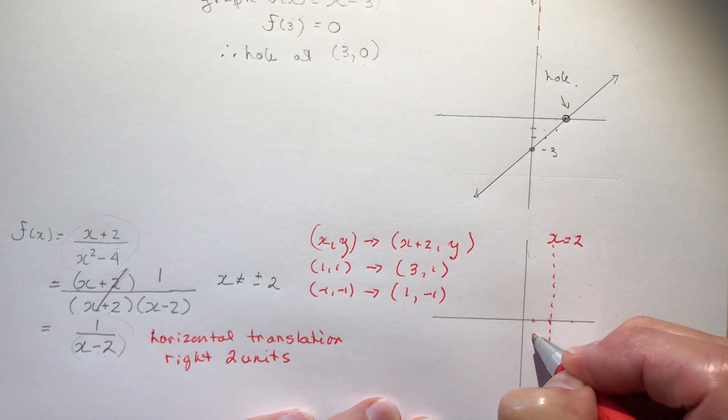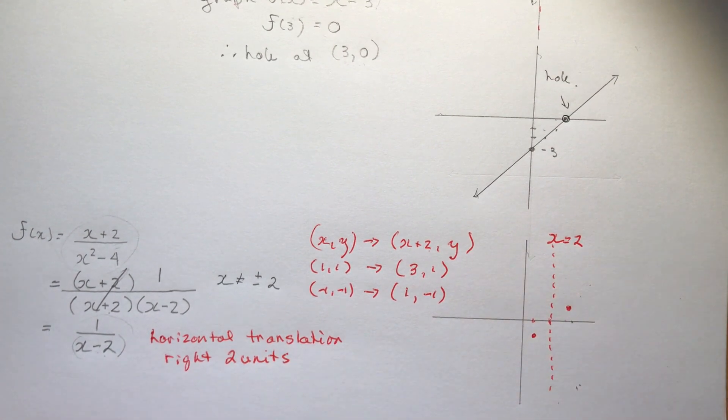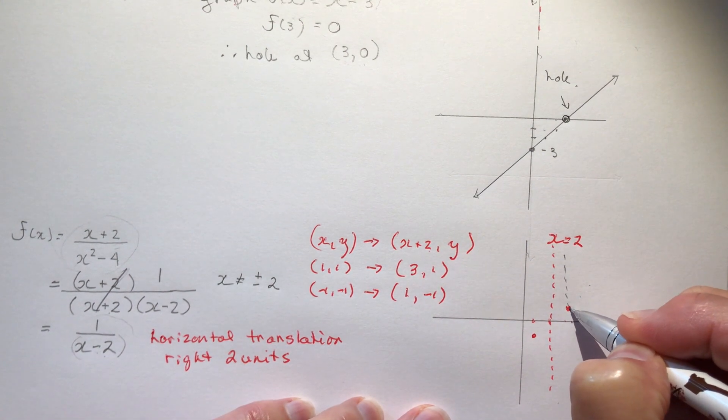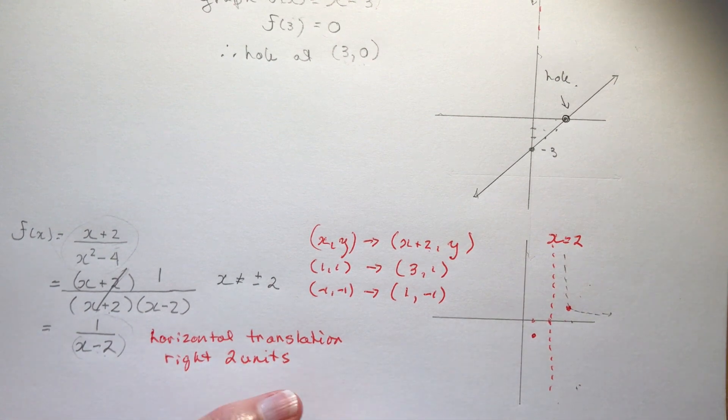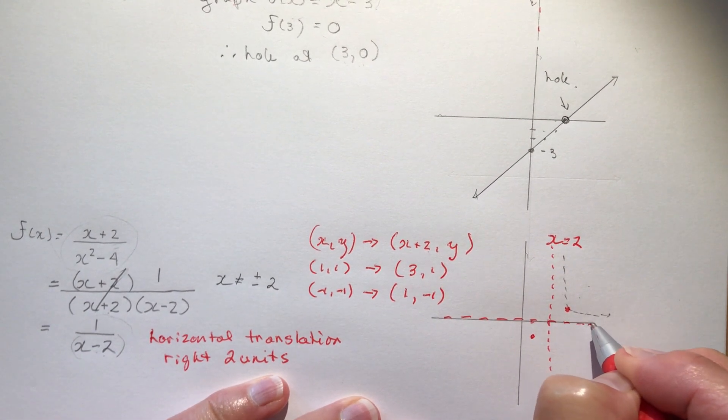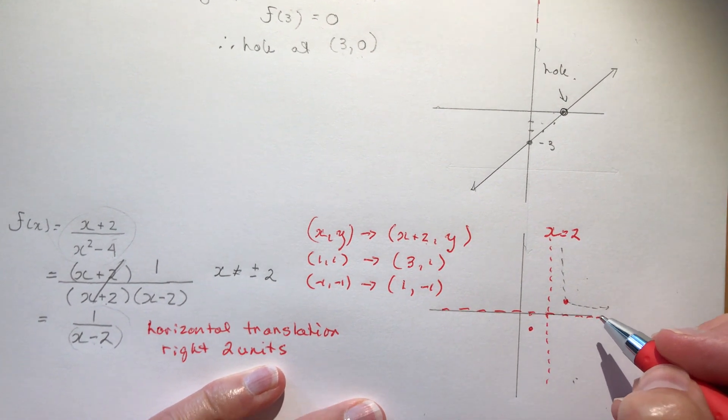So you can see that my graph has been just shifted over to the right like this. It still has this asymptote here, we should write that in as well. This is still here, we didn't move it. It's part of the function y equals 1 over x. So this is still y equals 0, x equals 2, and my function has moved over here.